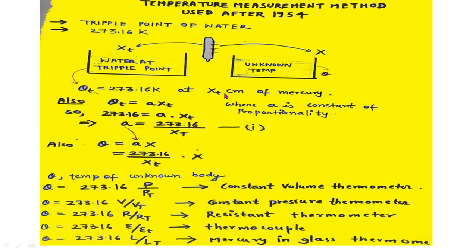As we know, the temperature measured by a thermometer is directly and linearly proportional to the thermometric property. So the temperature of the triple point of water, theta_t, equals a times x_t, where x_t is the length of mercury in the thermometer and 'a' is the constant of proportionality. You can get the constant 'a' as 273.16 divided by x_t.